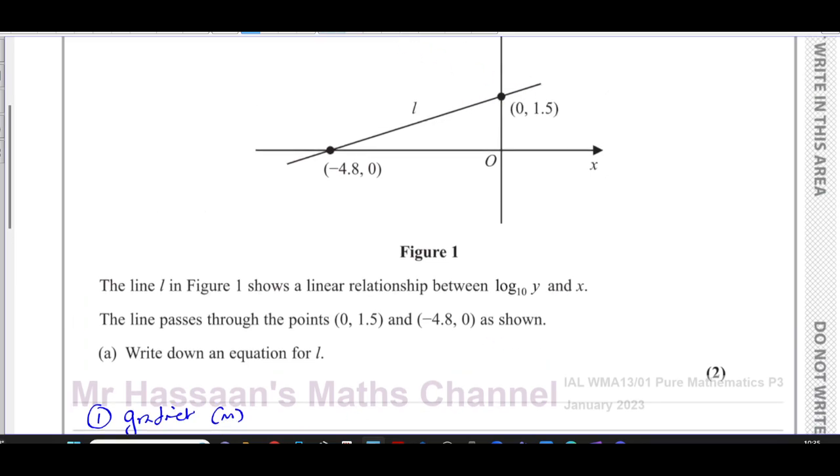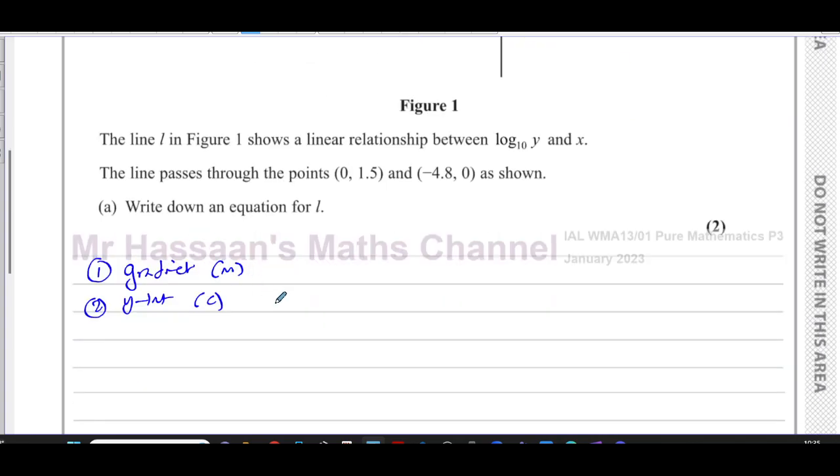Now we have the y-intercept in the question. This is the y-intercept here, the place where it crosses the y-axis. That's what we have, which is 1.5. So we can say c is equal to 1.5.